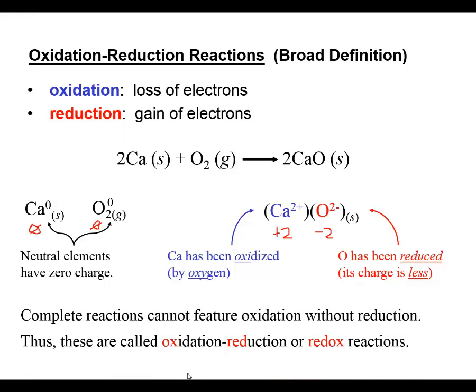Since we have oxidation and reduction occurring simultaneously, we often refer to these as redox reactions. We must both have oxidation and reduction occurring at the same time. One way you can often tell if you have a redox reaction is if you see neutral elements on one side and a compound on the other.